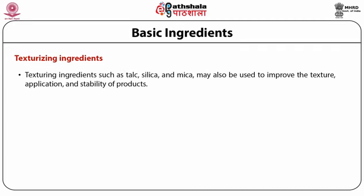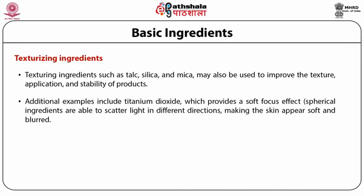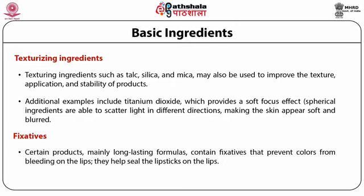Texturizing agents such as talc, silica and mica may also be used to improve the texture, application and stability of the product. An additional example is titanium dioxide, which provides a soft focus effect — spherical ingredients scatter light in different directions, making the skin appear soft and blurred. Bismuth oxychloride gives a satin shimmering effect to the products. Certain products, mainly long-lasting formulas, contain fixatives that prevent the color from bleeding on the lips and help in sealing the lipstick; examples are silicone resins.